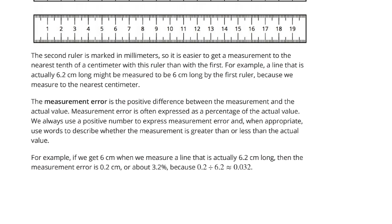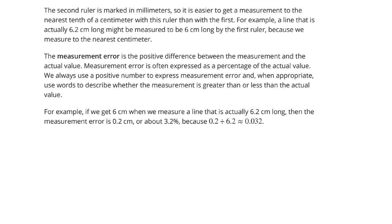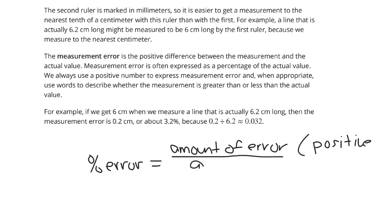And so, again, a key takeaway here is that to find your error, take the amount of error, and this is going to be a positive number, and divide it by the actual, and in this case, the actual measurement.